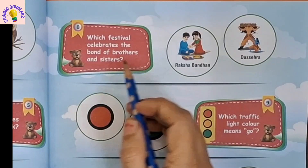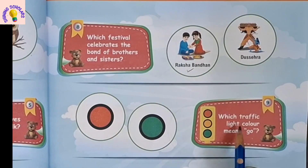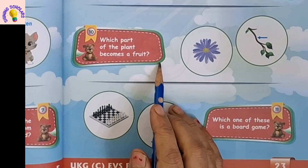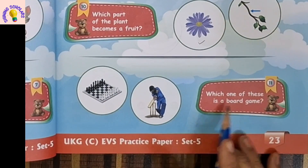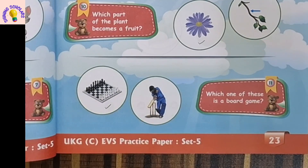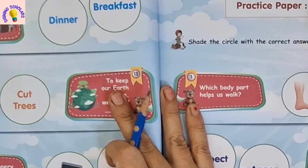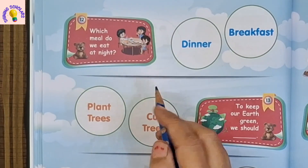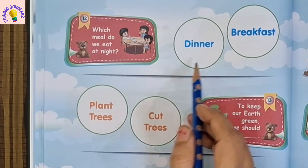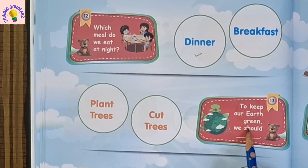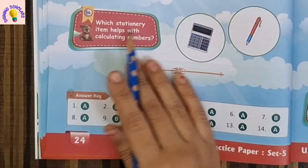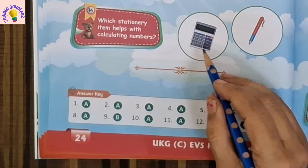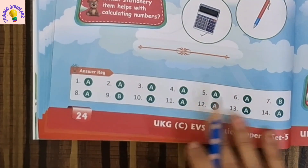Which festival celebrates the bond of brothers and sisters? Raksha Bandhan. Which traffic light color means go? Green. Which part of the plant becomes a fruit? Flower becomes a fruit, not leaves or stem. Which one of these is a board game? Chess is a board game. Which meal do we eat at night? It's dinner. To keep our earth green, we should plant trees, not cut trees. Which stationery item helps with calculating numbers? Calculator. You can check your answers at the end.